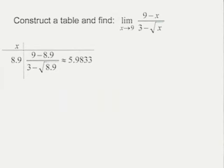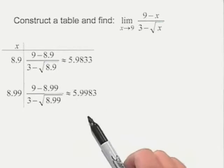Next, we're going to plug in a number even closer to nine, in this case, 8.99. And as you see, we plug that in there, we get 5.9983.